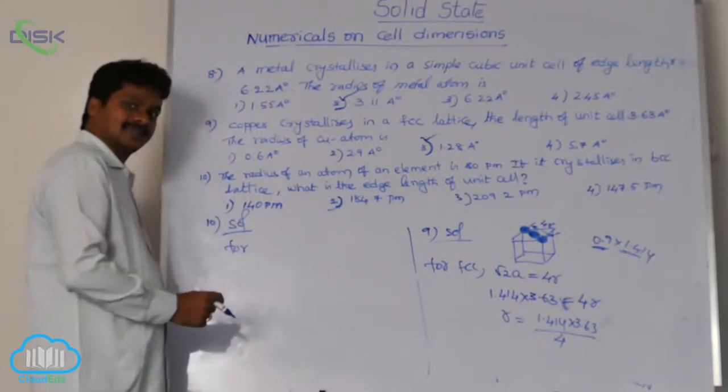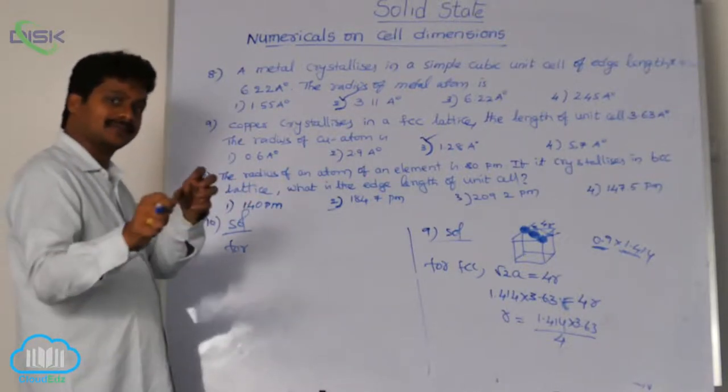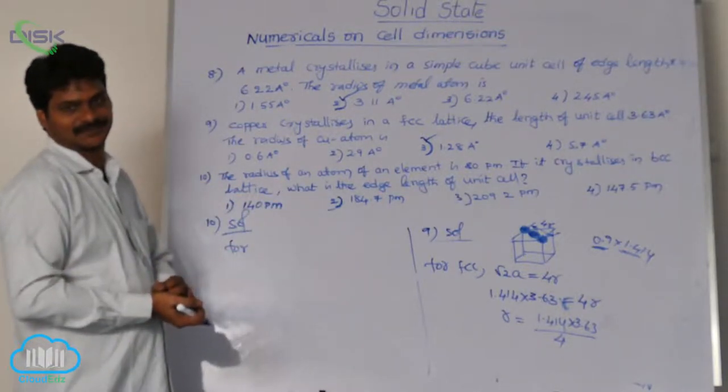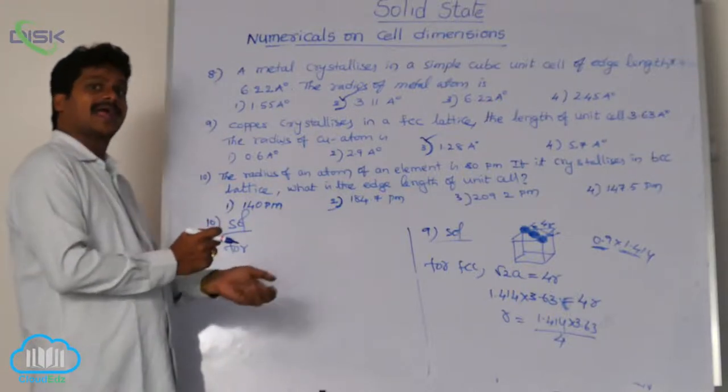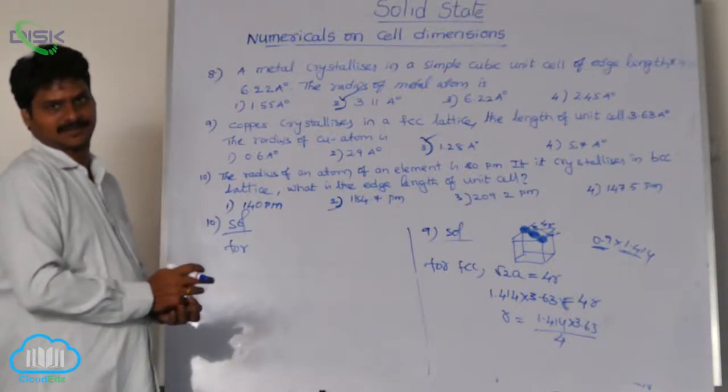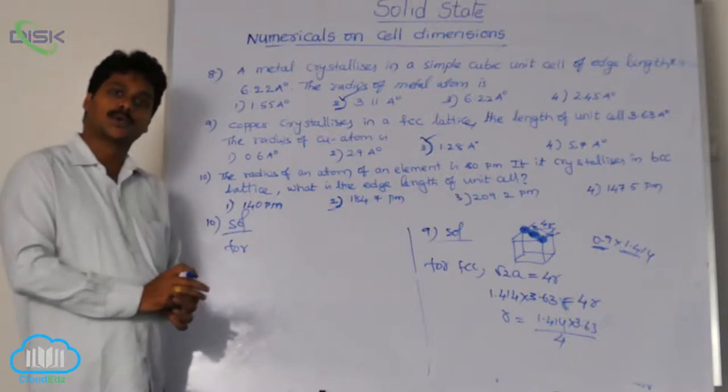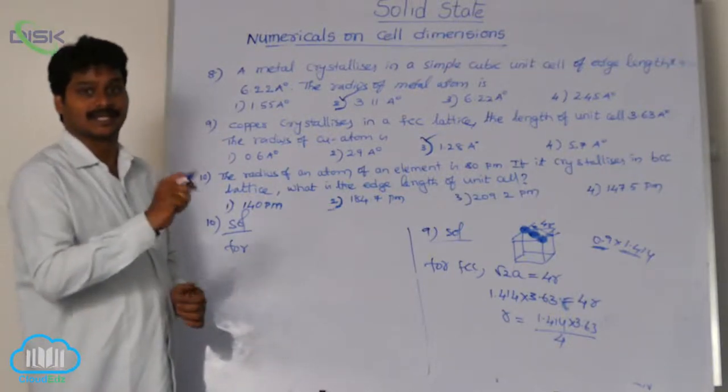In BCC, two corner atoms and the body center atom are in touch with each other. Along the body diagonal only, atoms are in touch. What is the body diagonal length? Root 3a.